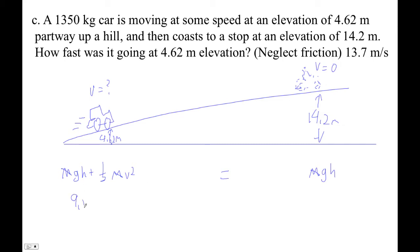So 9.81 times 4.62 plus one-half v squared equals 9.81 times 14.2. I'm gonna start on this side here - I'm gonna go 9.81 times 14.2, and then I'm gonna subtract this guy, so minus 9.81 times 4.62. Now I've got what one-half v squared is.